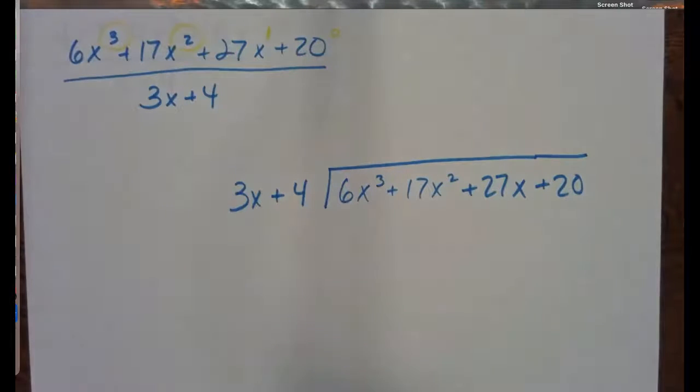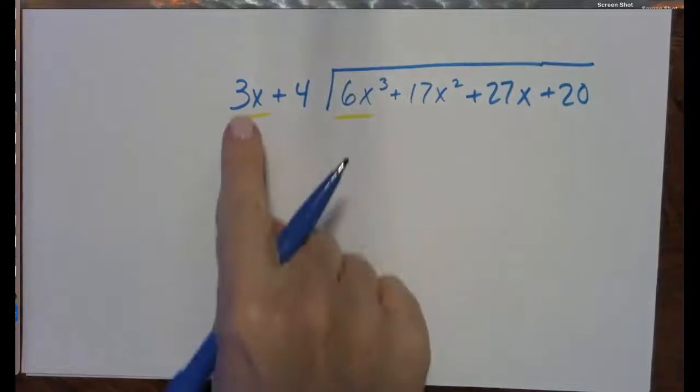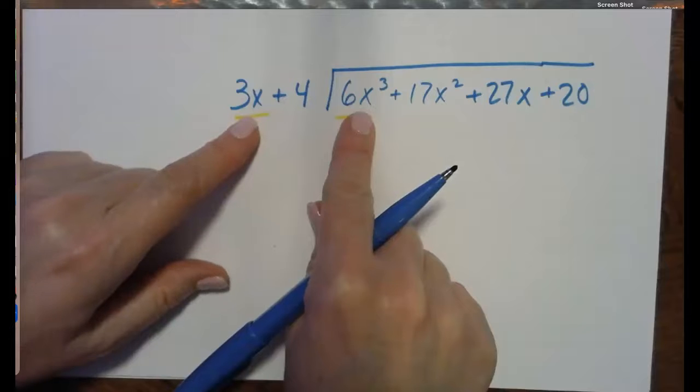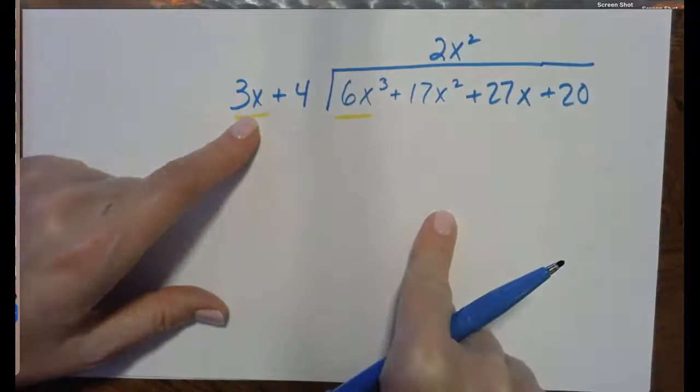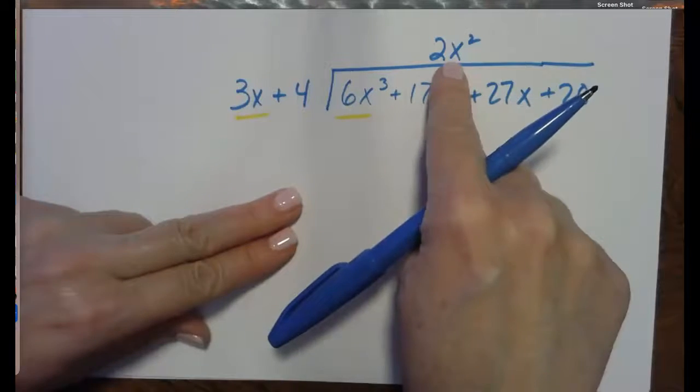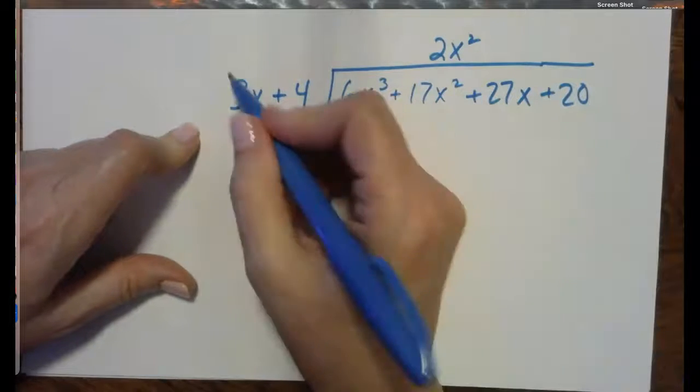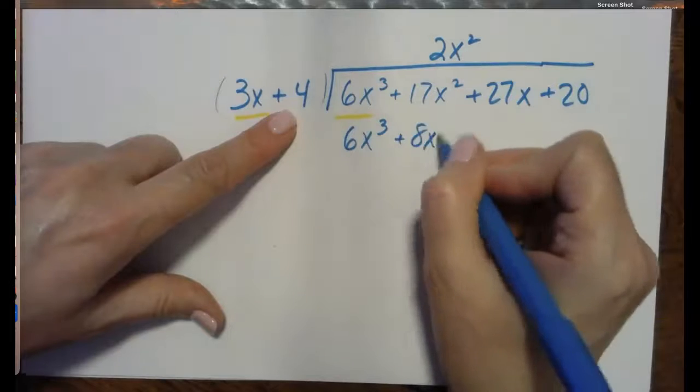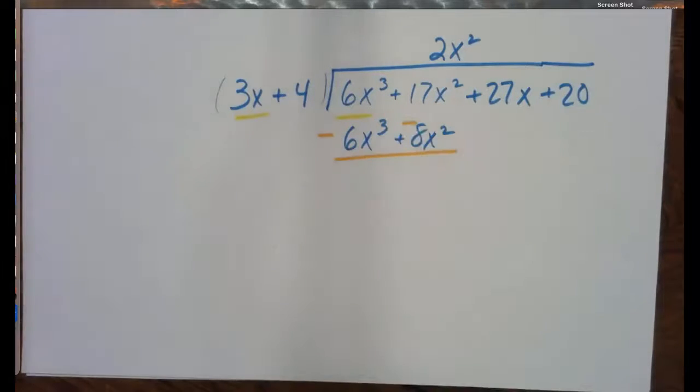So 6x cubed plus 17x squared plus 27x plus 20 is getting divided by 3x plus 4. So same steps, but all we're going to be comparing are these first terms. So 6x cubed divided by 3x to the first is 2x squared. I like to line up my like terms. That's division. Second step, multiply. 2x squared times 3x is 6x cubed. Remember, we're distributing here.